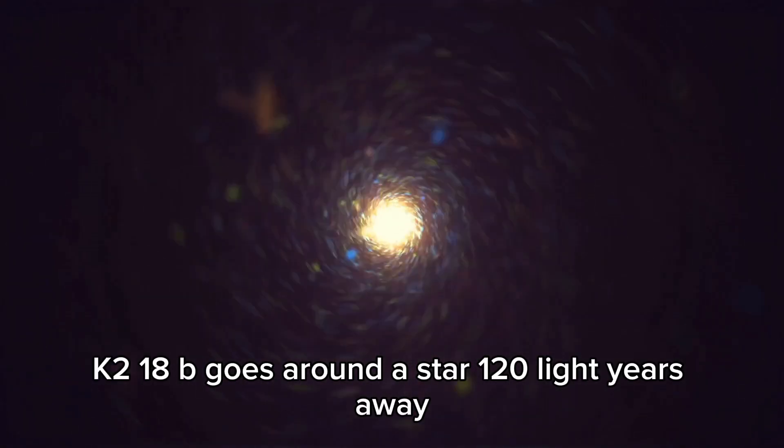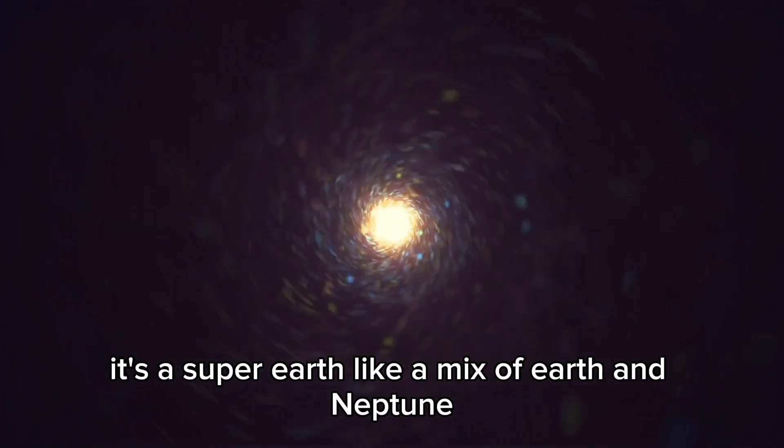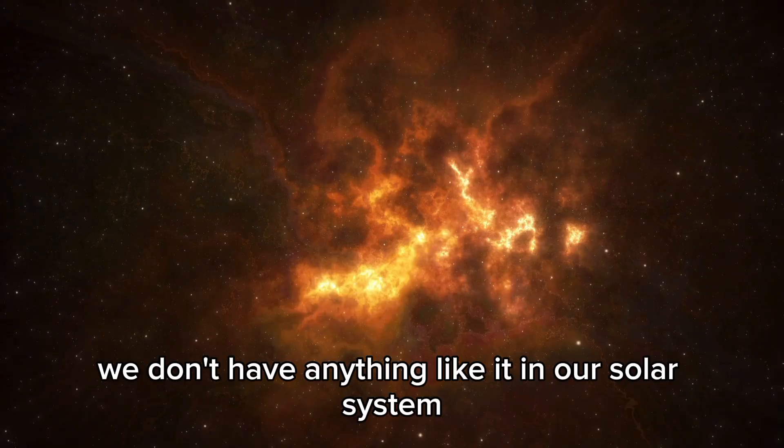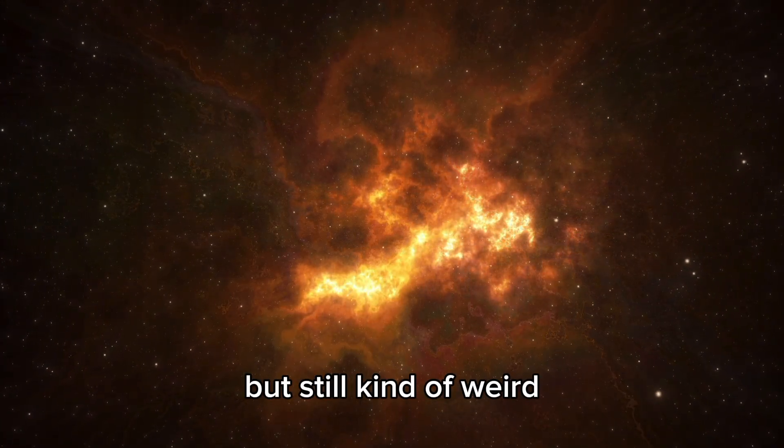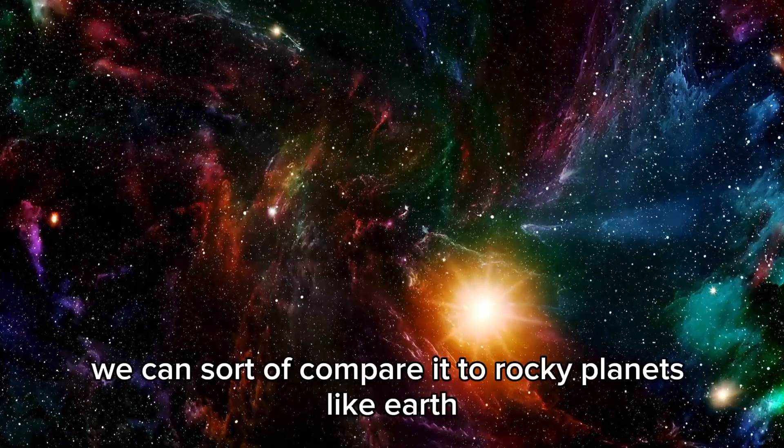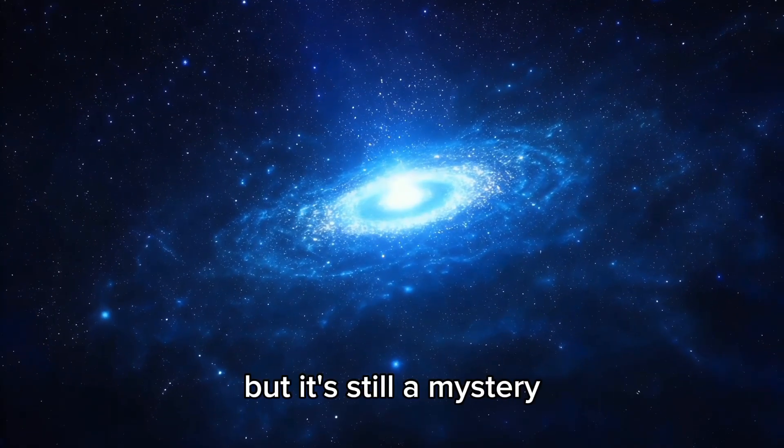K218b goes around a star 120 light-years away. It's a super-Earth, like a mix of Earth and Neptune. We don't have anything like it in our solar system. It's smaller than Neptune but still kind of weird, making it hard for scientists to know what it's really like.